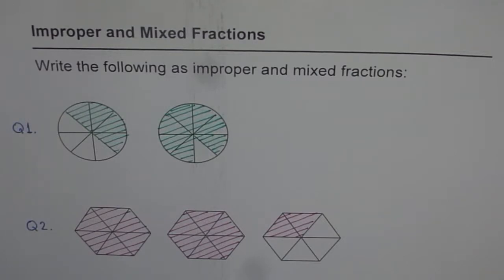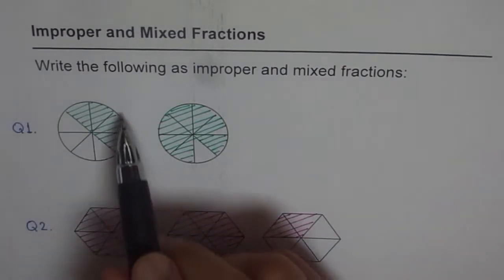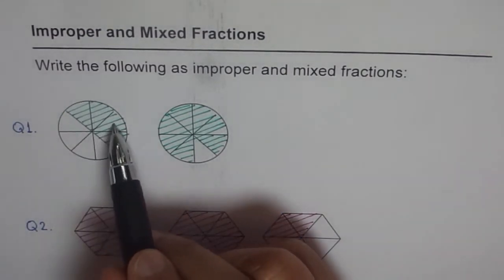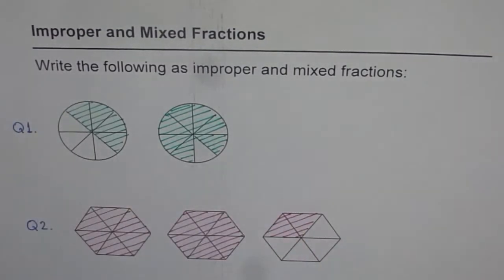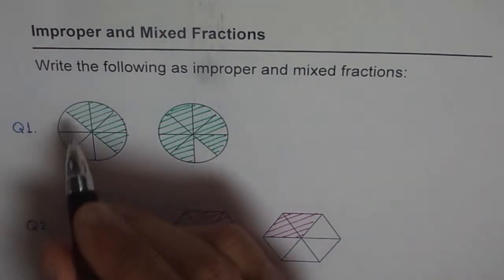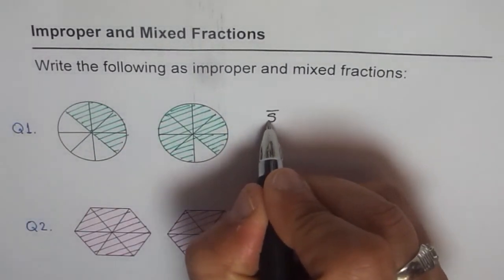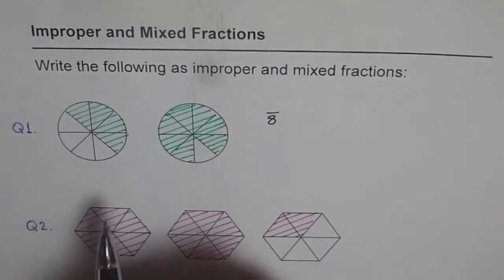I hope some of you have got the answer already. Here is how I will do them. So let's think about it. So we have this circle, which is divided into 1, 2, 3, 4, 5, 6, 7, 8 equal parts. So every part is an 8th.